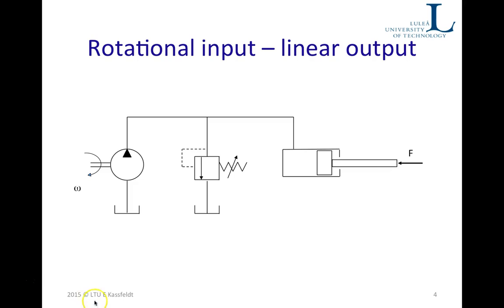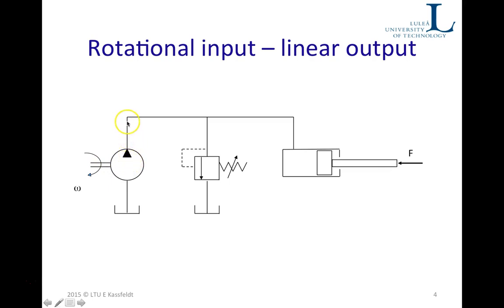This is another system where we have changed the first cylinder to a rotational machine — a pump, an ordinary pump. Sometimes we draw the electrical motor here as well, but in this case we only show that we start to rotate this shaft, and this will imply that we have fluid going in this pipe over to the cylinder. If there is an external load here, there will be a pressure built up that goes in the opposite direction, so we need an external torque here in order to overcome that external load.